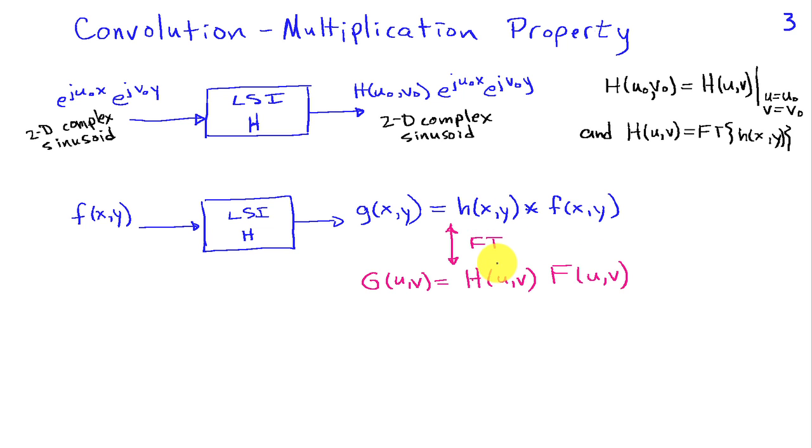We get an output g of x comma y that is the convolution of the impulse response with the input, and if I take that into the frequency domain, I find that my 2D Fourier transform of the output is just the product of the 2D Fourier transform of the impulse response and the 2D Fourier transform of the input. Our convolution multiplication property holds as it does in 1D, and this is a very powerful property because it allows us to think about 2D processing in the frequency domain.